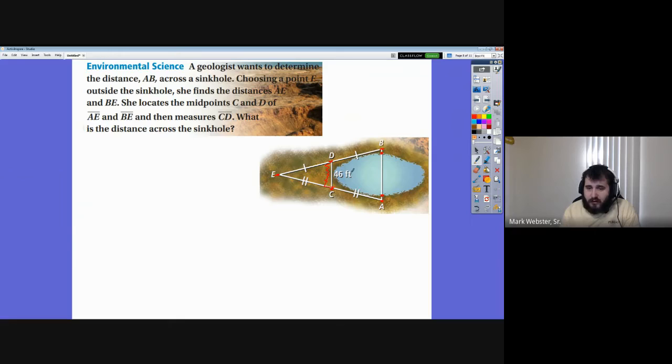In feet. And, you know, I want to point out with the Q-tip stuff, you know, make sure that you're actually addressing what they're asking. You know, look at the problems. You know, this is a word problem. I could have put this on your Q-tips just as easily as I could have put the one I did. A geologist wants to determine the distance AB across the sinkhole. Choosing a point E outside the sinkhole, she finds the distances AE and BE. She locates the midpoints C and D of AE and BE, then measures CD. What is the distance across the sinkhole?